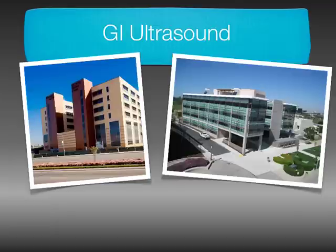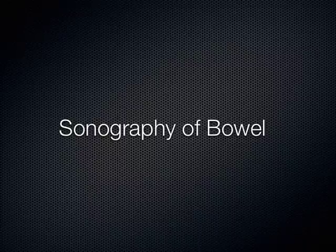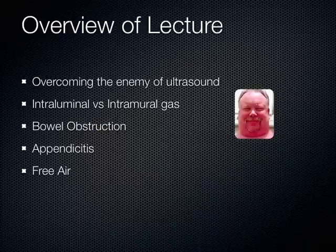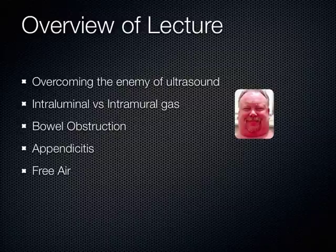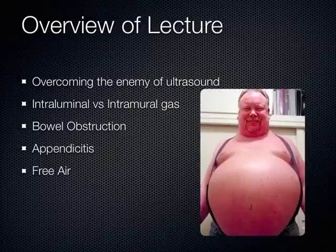We're going to talk now about the ultrasound of the bowel and then move into the gallbladder. Normally when you talk about ultrasound of the bowel, people wonder — there's air in the bowel, and air is the enemy of ultrasound. You can't use ultrasound for the bowel. But actually there's a lot of things you can see with ultrasound of the intestines. What you need to learn is how to overcome the enemy of ultrasound, which is the bowel gas, and sometimes it's pretty significant how much bowel gas there is.